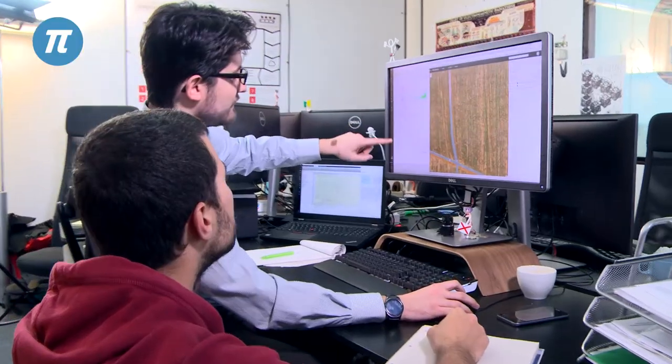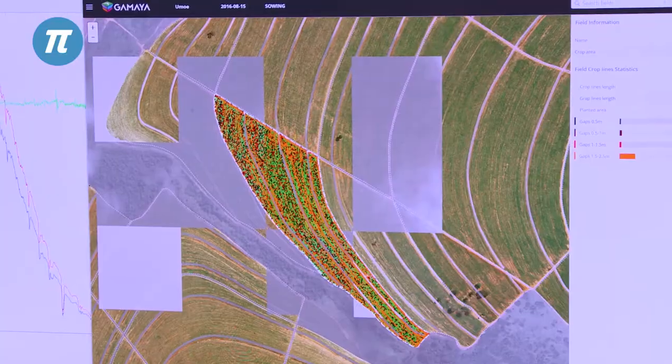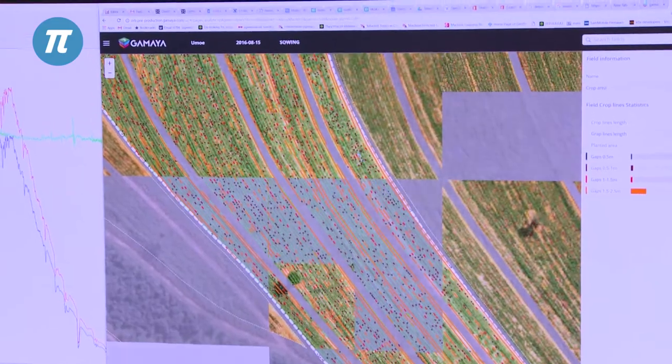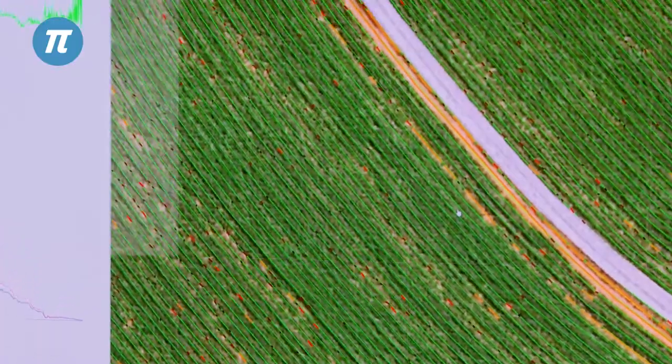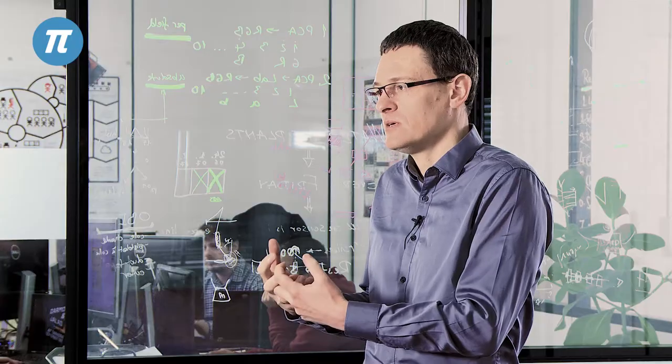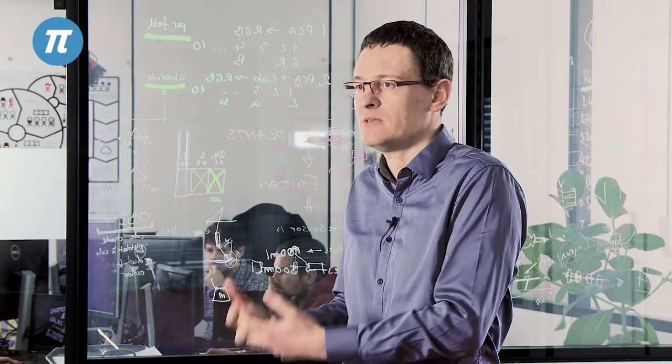And we use very sophisticated computer algorithms, artificial intelligence, to actually convert the imagery that we are collecting into information for the farmers concerning the precise state of their plants.